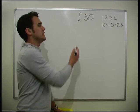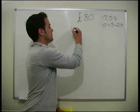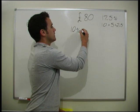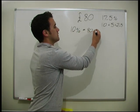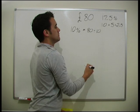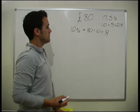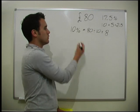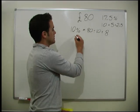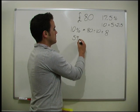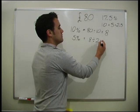10% of 80 is easy — it's just 80 divided by 10, so 10% equals 8. And 5% is just half of 10%, so 5% equals 8 divided by 2.